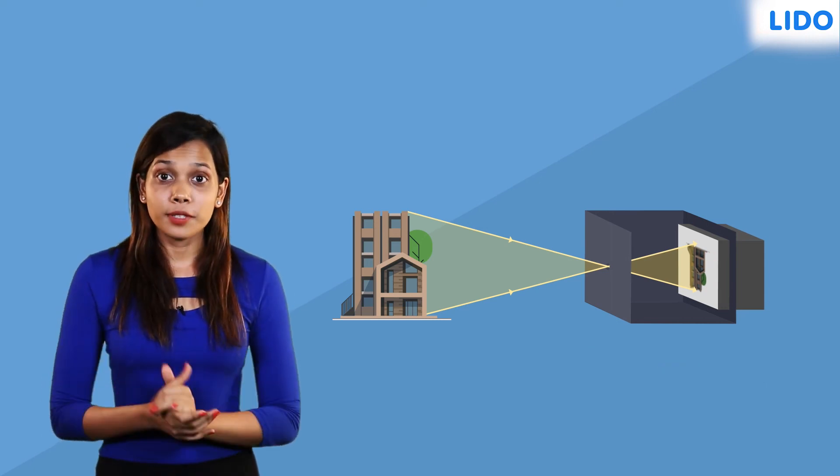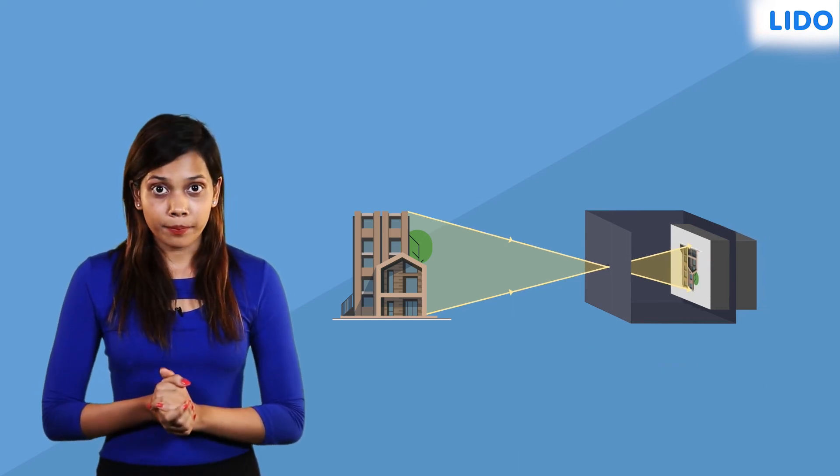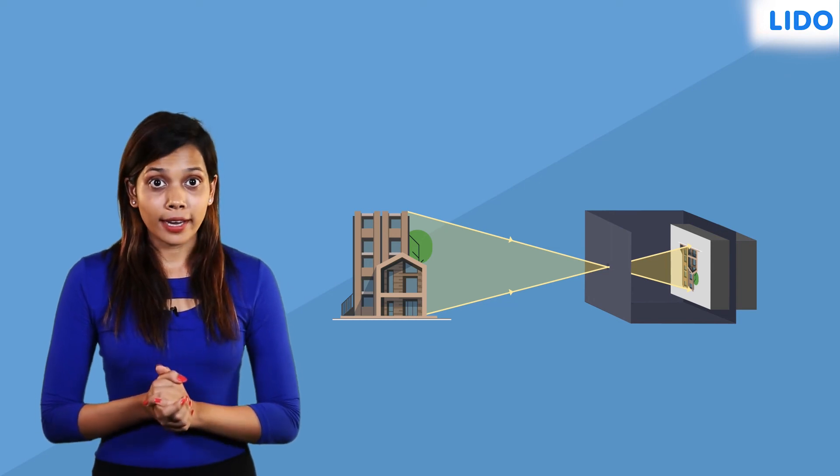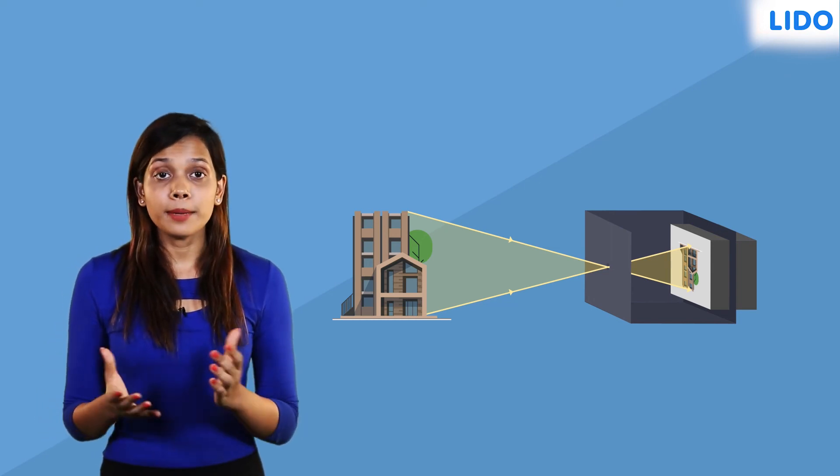You can adjust the position of the smaller box if the image is dim so that the light from the object can get aligned with our tracing paper screen.